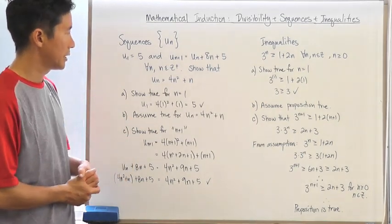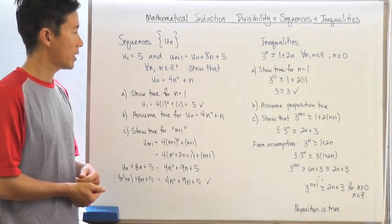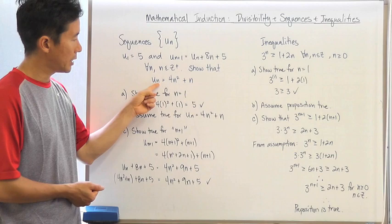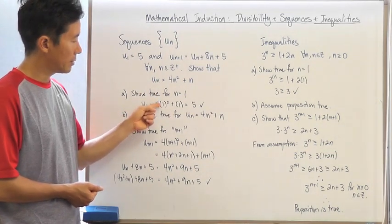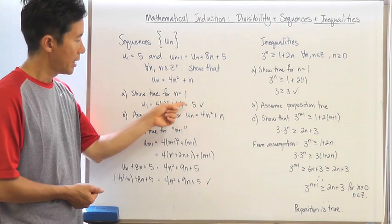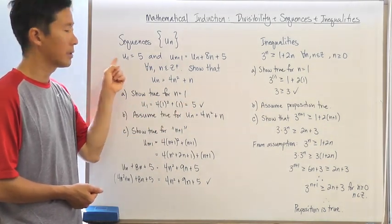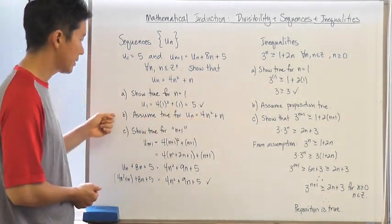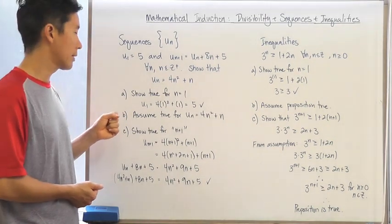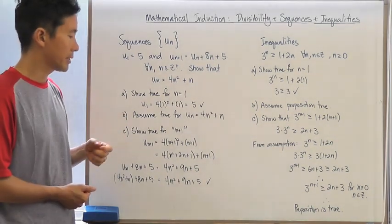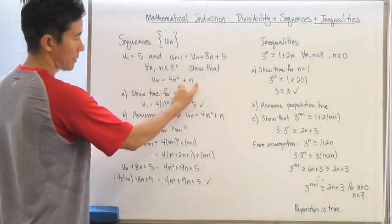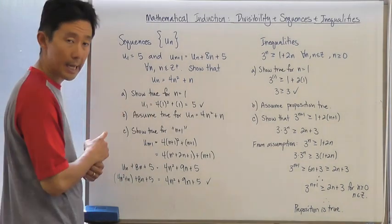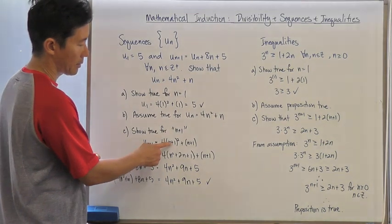Following the strict rules of induction, we need to show this is true for n equals 1. Substituting n=1, I get u sub 1 equals 4 times 1 squared plus 1, which equals 5. Since u sub 1 is defined as 5, that is true. We then assume this is true — that's the second step of mathematical induction — and need to show it's true for n plus 1 by substituting n+1 wherever there was an n.